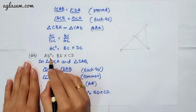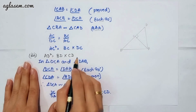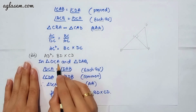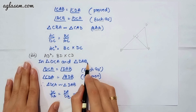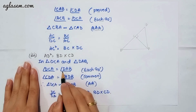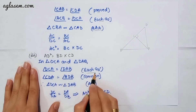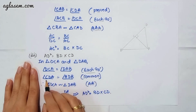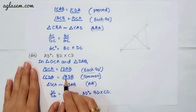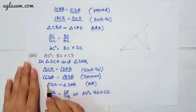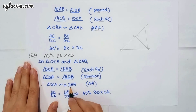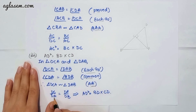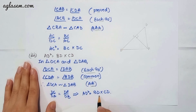The third part says AD² = BD × CD. In triangles DCA and DAB, angle DCA = angle DAB = 90° and angle CDA = angle ABD (common). So triangle DCA is similar to triangle DAB by AA similarity. Therefore DC/DA = DA/DB, giving AD² = BD × CD.